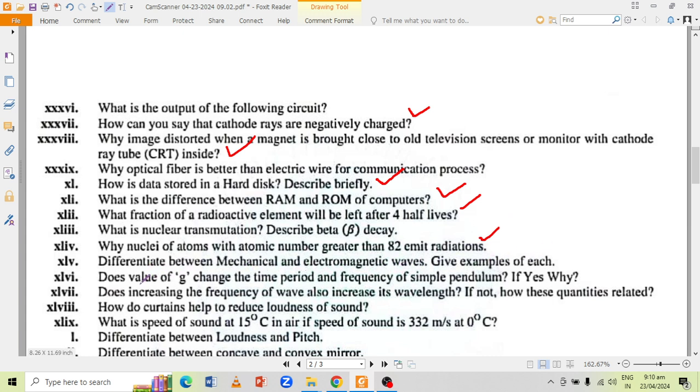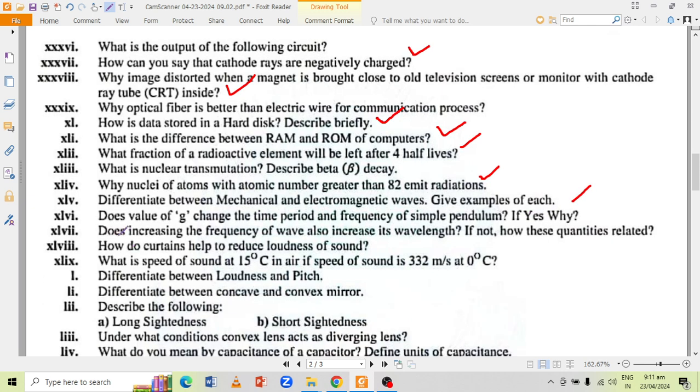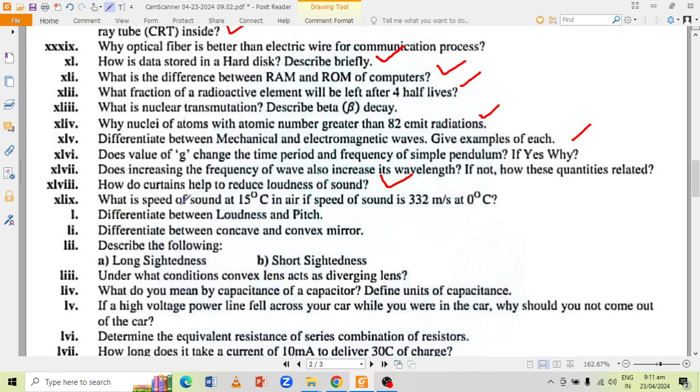Differentiate between mechanical and electromagnetic waves. Give examples of each. Does value of g change the time period and frequency of simple pendulum? If yes then why? Does increasing the frequency of wave also increase its wavelength? If not then how these quantities are related? How do curtains help to reduce the loudness of sound? What is speed of sound at 15 degrees Celsius in air if the speed is 332 meters per second at 0 degrees Celsius?